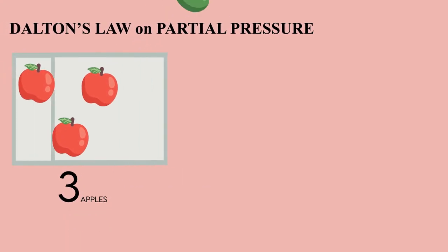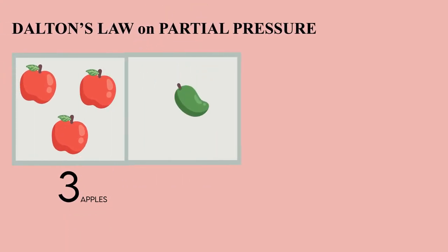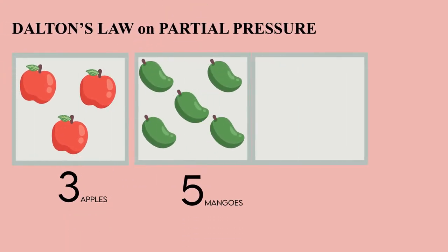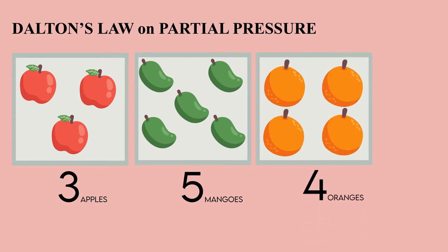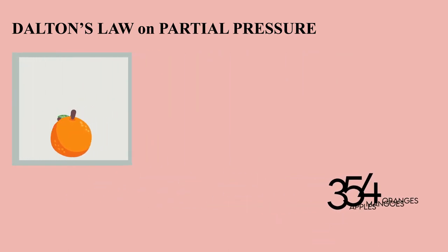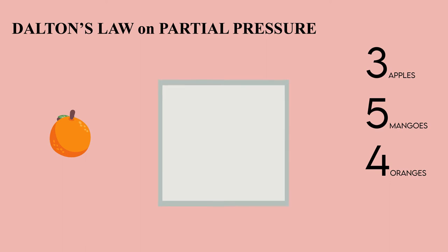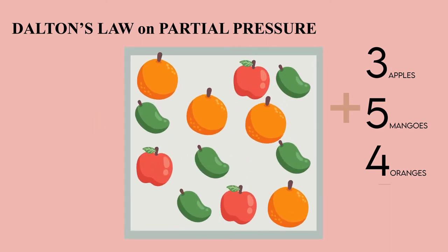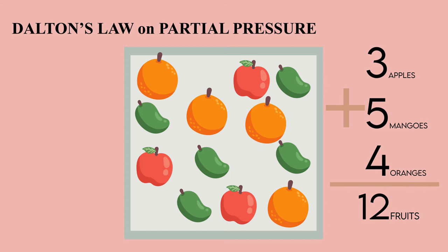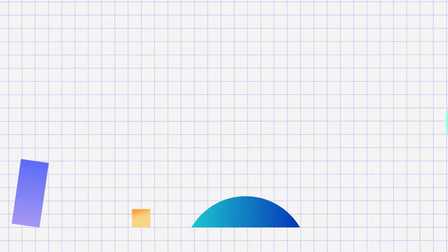Suppose we have three apples, five mangoes, and four oranges in three separate containers. Now we're going to combine them all into one big container, and if you count all the fruits it's going to be 10 fruits. We're going to incorporate that into a much more detailed topic later.